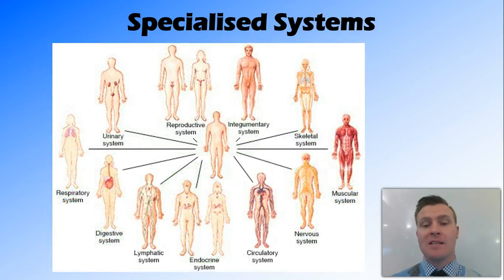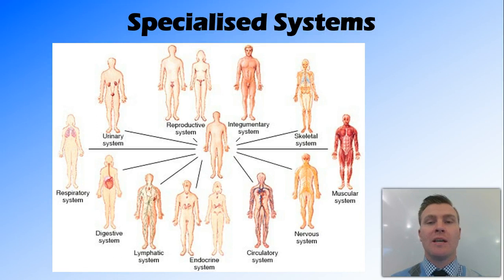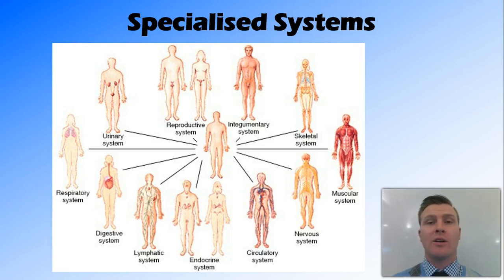Some of these systems might be circulatory systems to move those nutrients around to all the cells, the respiratory system to get the oxygen from the outside of the body inside the body, and the digestive system to break down food into the glucose for that respiration. All these specialized systems work side-by-side in a multicellular organism, such as a human, in order to keep all the cells in that organism alive.